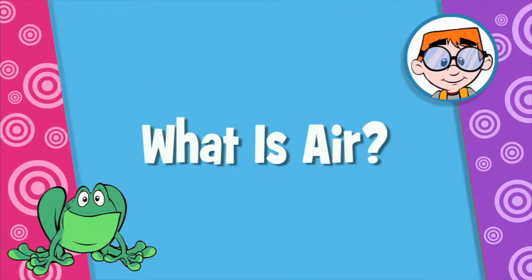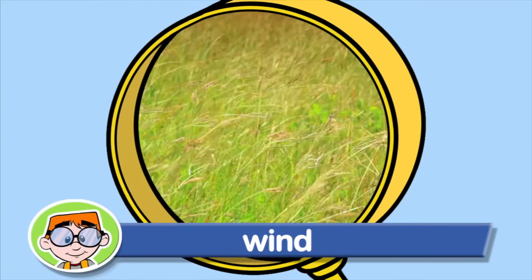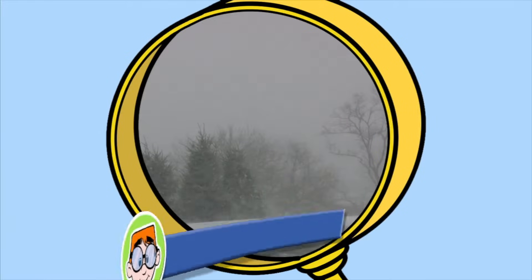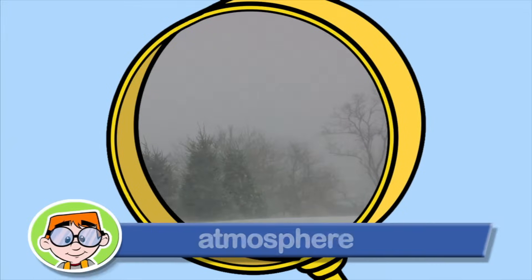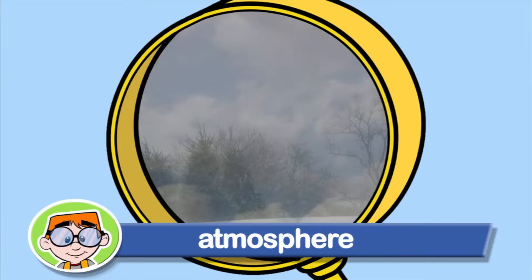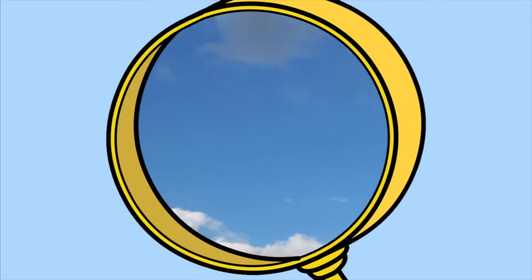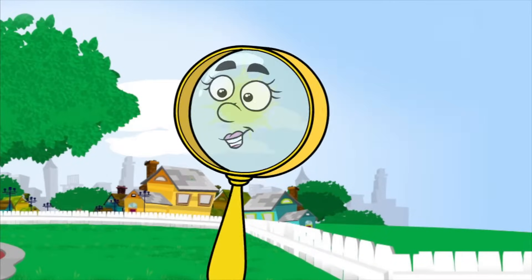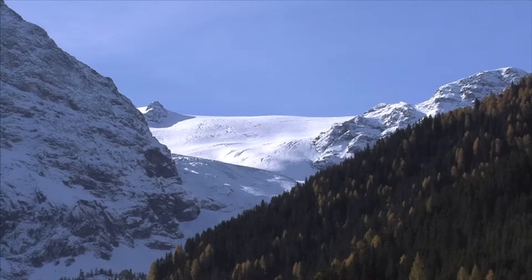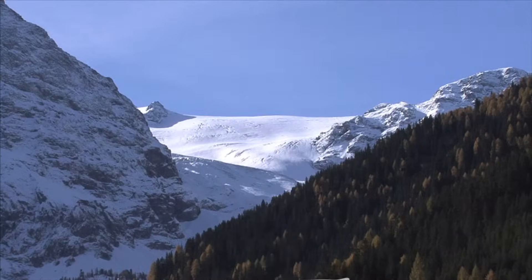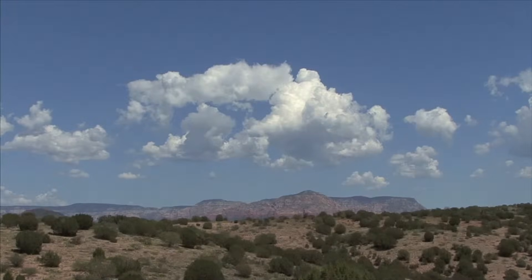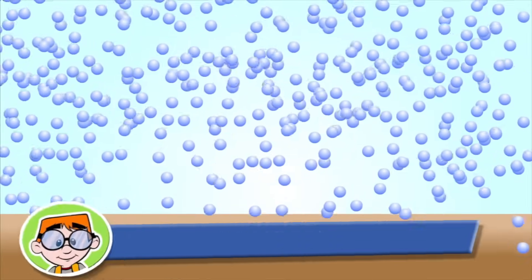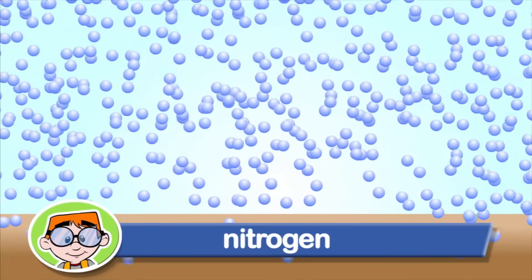What is air? Wind is moving air. Air surrounds our planet Earth — it's the atmosphere. When the air in the atmosphere moves, we call it wind. So wind is moving air. But what is air? That's a good question. First of all, the Earth is full of air. Air is everywhere. Air is made up of tiny molecules of different kinds of gases, like oxygen and nitrogen.